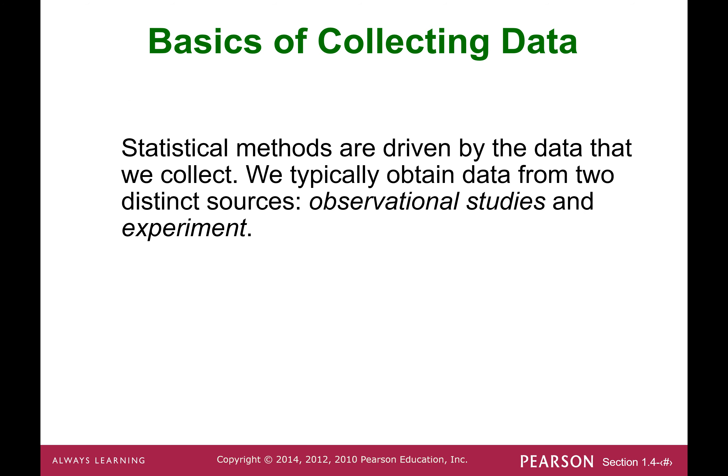There are two major statistical methods: the first one is observational study, and the second one is experiment. Those two are the most important tools researchers use to conduct a research study. Let's get to the definition of experiment and observational studies.